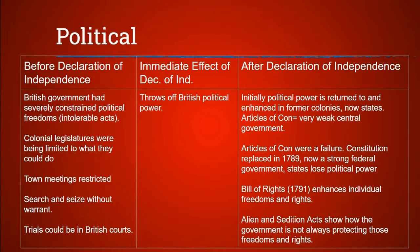The Constitution replaced the Articles in 1789, in which the central government gained power and sovereignty while the states lost it. Two years later, the Bill of Rights were added to the Constitution, which enhanced individuals' freedoms and rights — on paper, anyways. Under the second president, John Adams, it was shown how these freedoms could be curtailed as his administration passed the Alien and Sedition Acts.